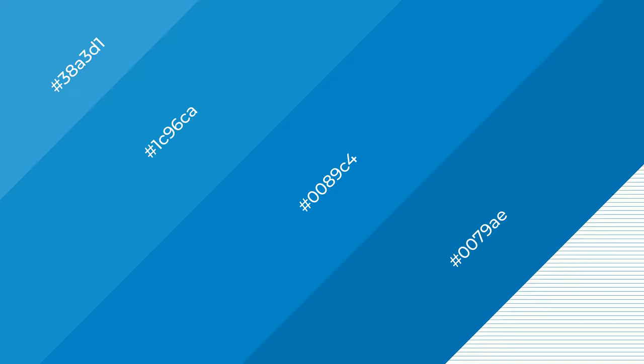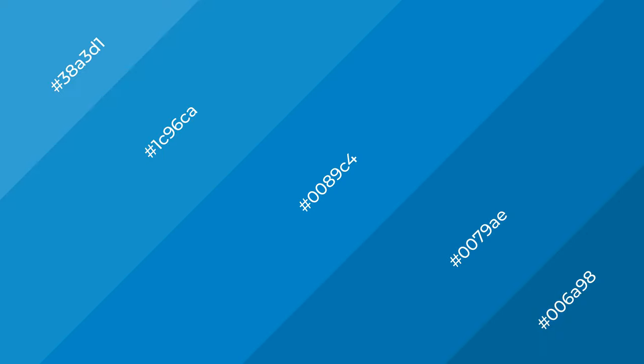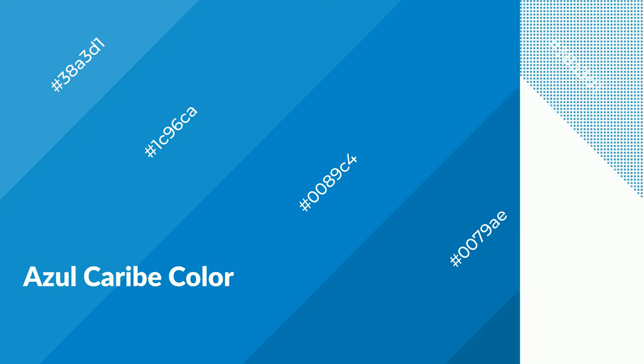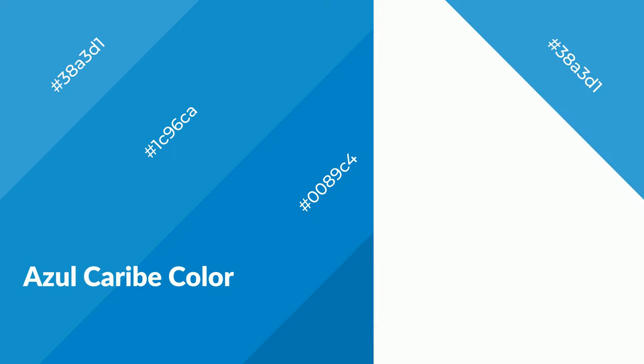Azul caribe is a cool color and it emits calming, serene, soothing, refreshing, spacious, unwinding, peaceful, and relaxed emotions.